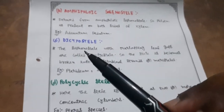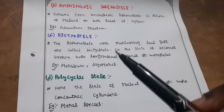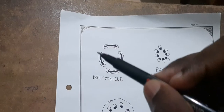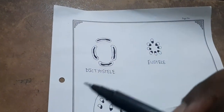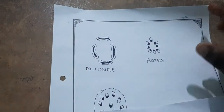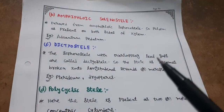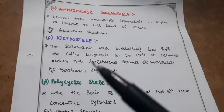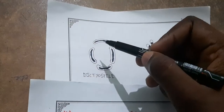Dictyostele — a siphonostele with overlapping leaf gaps is called dictyostele. Due to overlapping leaf gaps the stele becomes broken into longitudinal strands called meristeles.